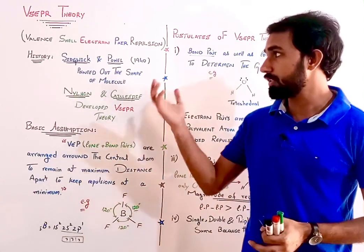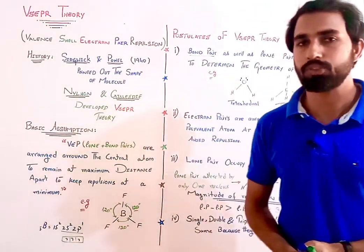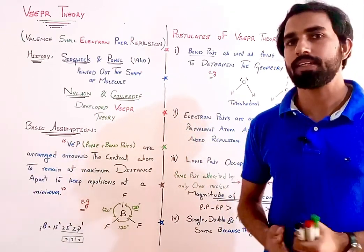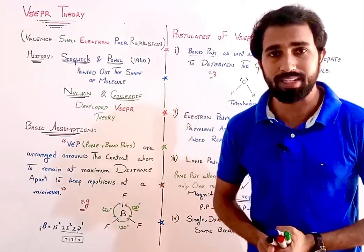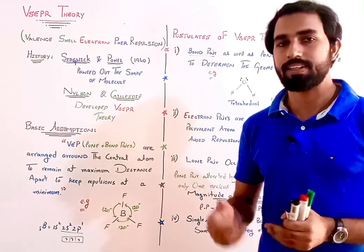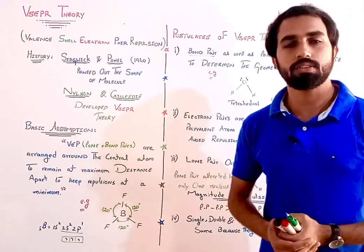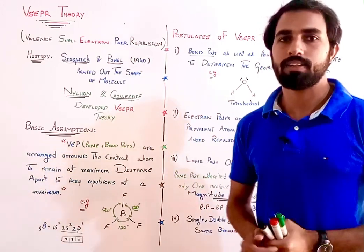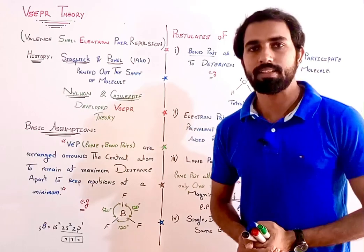تو guys، یہ آج کا جو ہمارا lecture تھا VSEPR theory کے متعلق — وہ ہم نے دیکھا: اس کا basic assumption، اس کے postulates، اس کی history کے بارے میں ہم نے جانا۔ اب مزید اس کی جو types ہیں جس میں AB2 type، AB3 type اور AB4 type molecules آتی ہیں — یہ کون سے molecules ہیں اور کس طرح سے ہیں، یہ ہم detail کے ساتھ next lecture میں جانیں گے انشاءاللہ۔ اگر کوئی question یا confusion ہو تو comment box میں پوچھ سکتے ہیں انشاءاللہ۔ اللہ حافظ۔